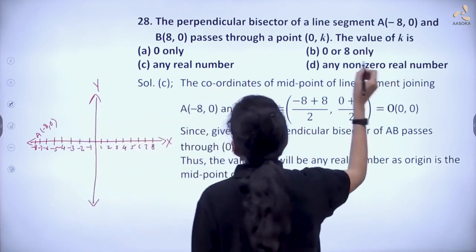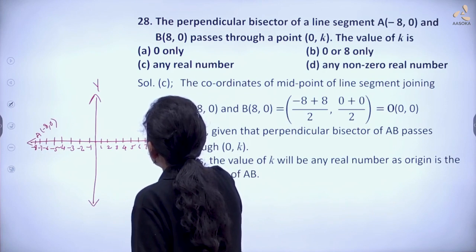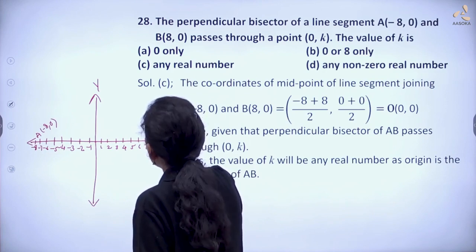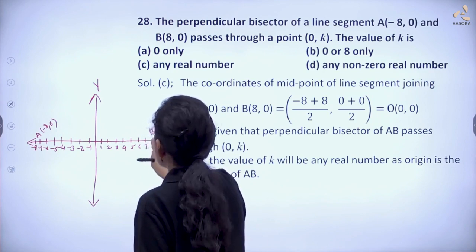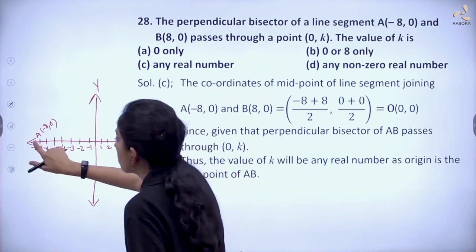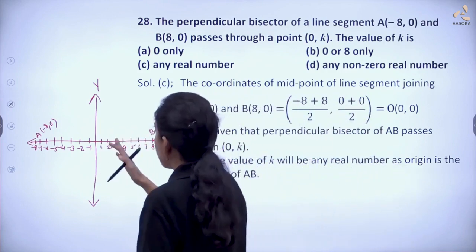And let's plot the point B(8, 0). This is the point. Okay, and this is (-8, 0). So here we are given the coordinate axis.